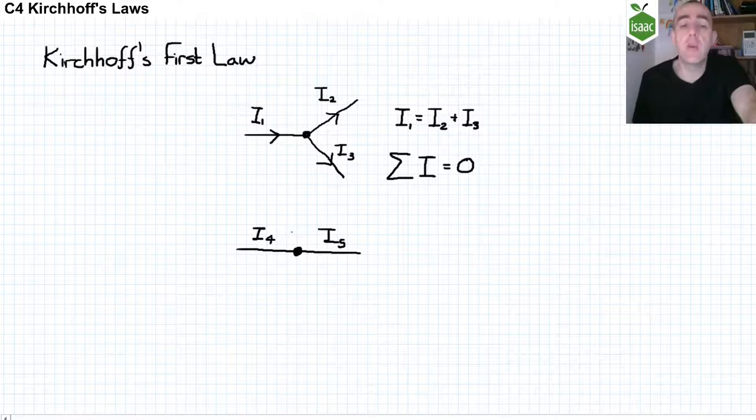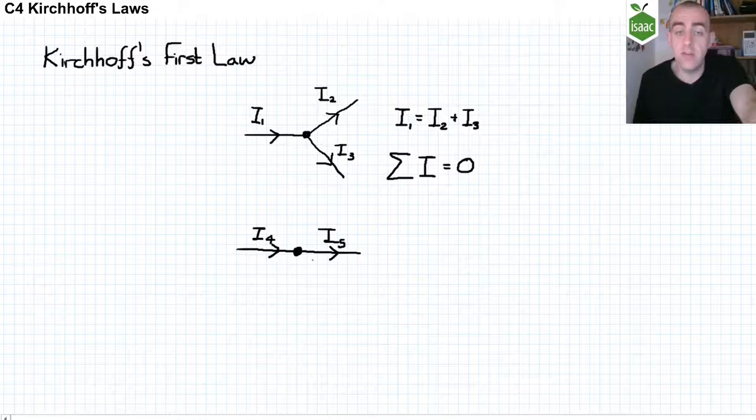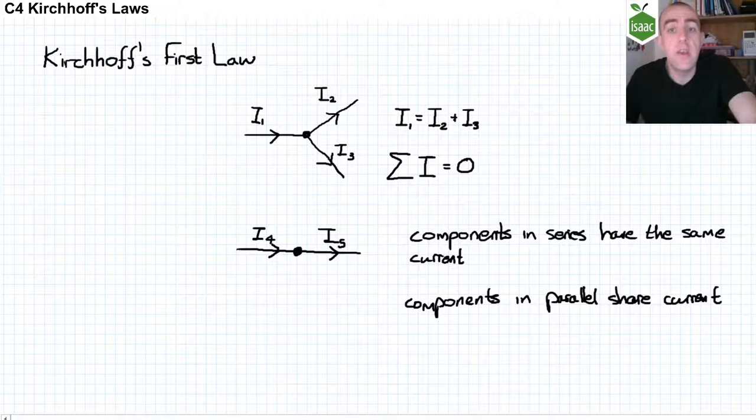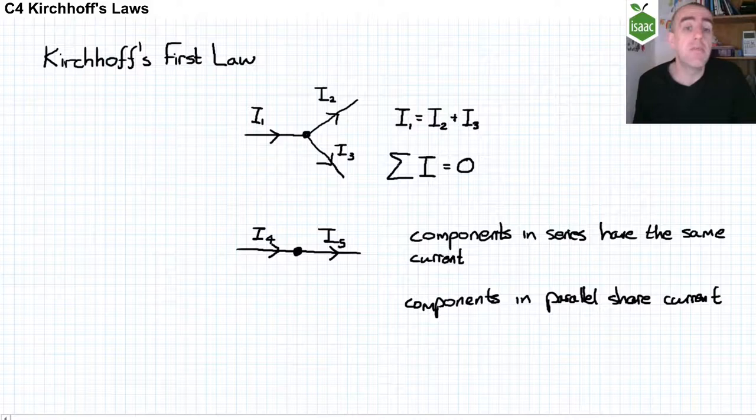A consequence of this is that components that are in series must always have the same current, and that if components are in parallel, then there must have been a branch at some point in the circuit before those two currents, and therefore the currents are shared between those two components.